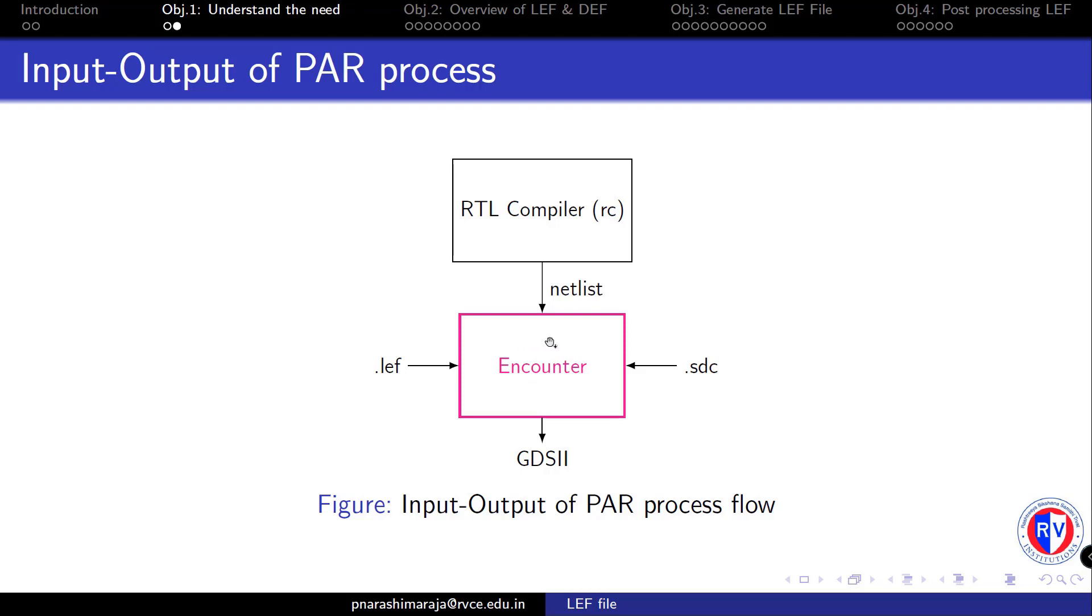As shown, the tool that performs the place and routing process is Encounter from Cadence. There are basically three input files that we need to provide for performing a place and routing process. Of this, the dot LEF file is what we are going to generate in this experiment so that this could be used during the PAR process.